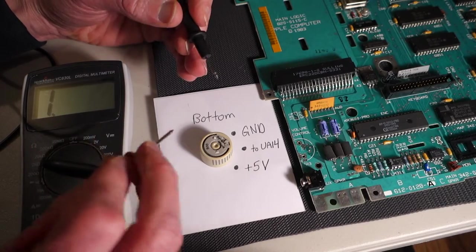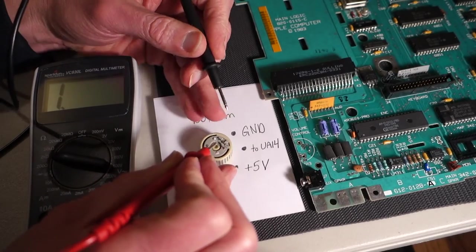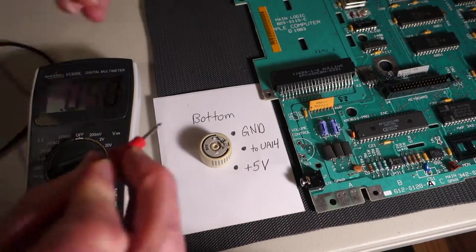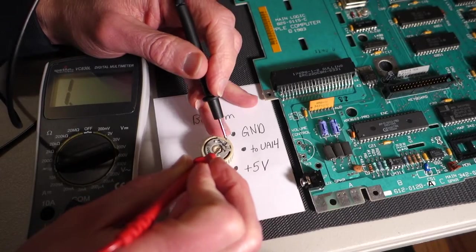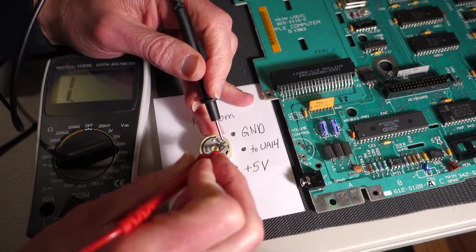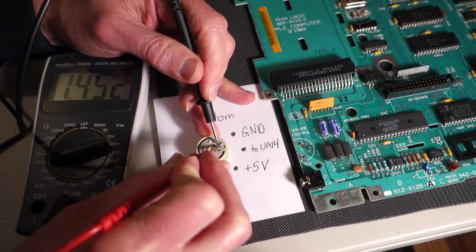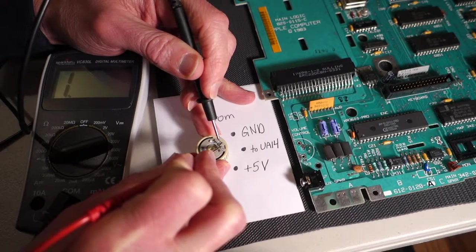So right now I have the button turned off and I've got it set to beep for continuity. So if we attach the leads between UA14 and ground then it should beep if I get it on there correctly.